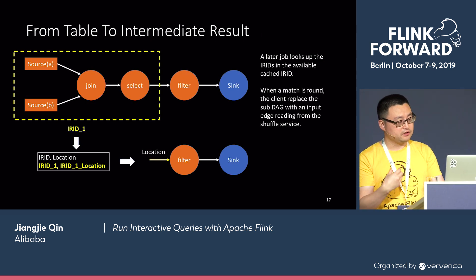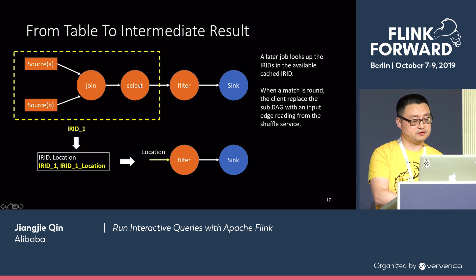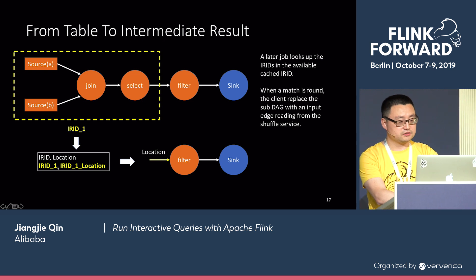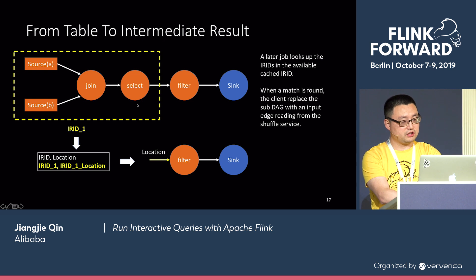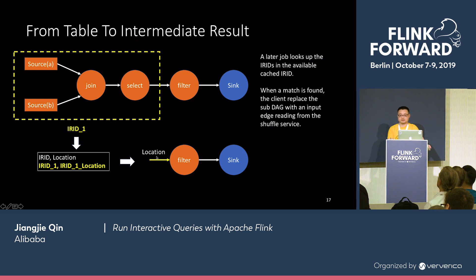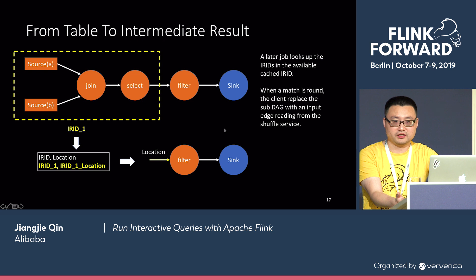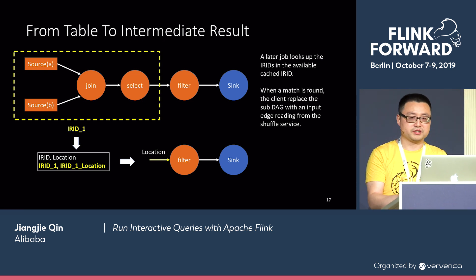When a later job comes, it will essentially try to compute the same subgraph we have already cached. We know the output of the select node is intermediate result ID 1, and we do a lookup in the client to see whether it's been cached. If it's already been cached, instead of submitting the entire graph to the runtime, we replace this subgraph and simply add an edge to the filter node — replacing the filter node's input with the location from the shuffle service which has the results. We then submit this modified graph to the runtime, and the Task Manager simply executes it by reading from the shuffle service instead of recomputing the entire subgraph.